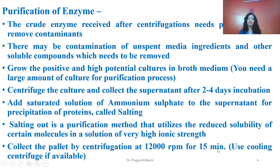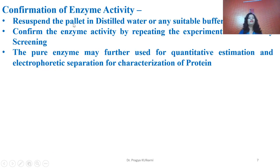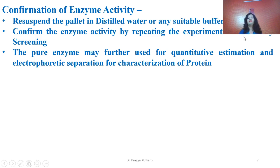For confirmation of enzymatic activity, the lipase polypeptide collected after purification is suspended in distilled water or a suitable buffer to prepare a solution, and this solution is used as an enzyme source for secondary screening as done earlier. Wells are bored in agar medium and filled with the purified enzyme. If the secondary screening confirms enzymatic activity, the pure enzyme can be used for protein quantity estimation and characterization via electrophoretic profile.